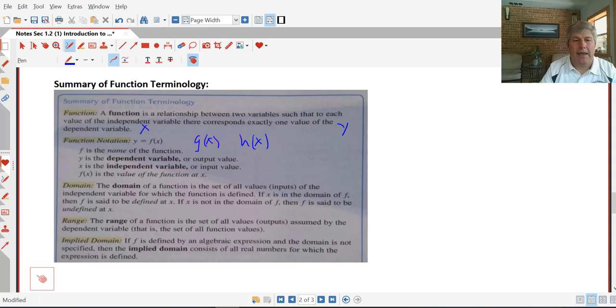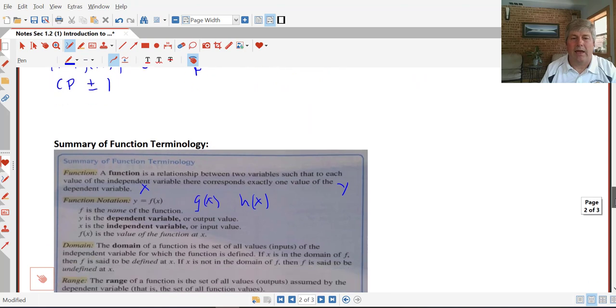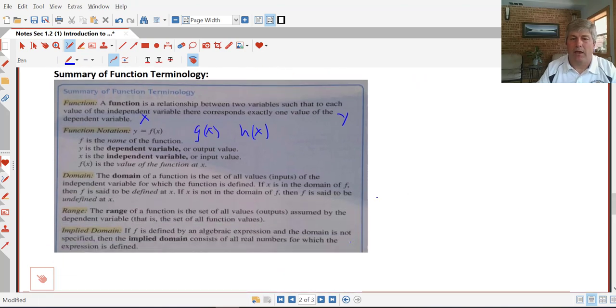Review of domain or inputs or independent. And range is the outputs or dependent. And then implied domain. If f is defined by an algebraic expression and the domain is not specified, then the implied domain consists of all real numbers for which the expression is defined. So in our problems, our domain here was implied. We had to figure it out.